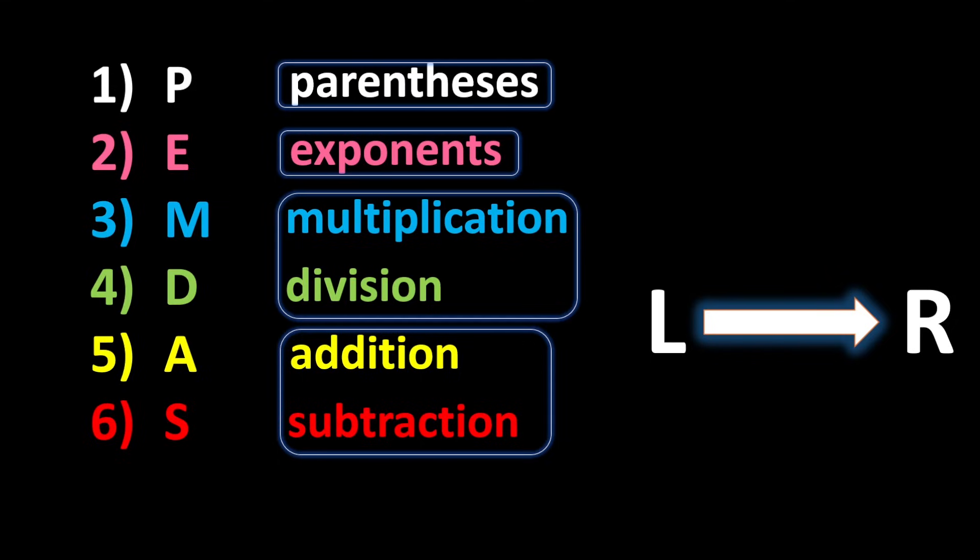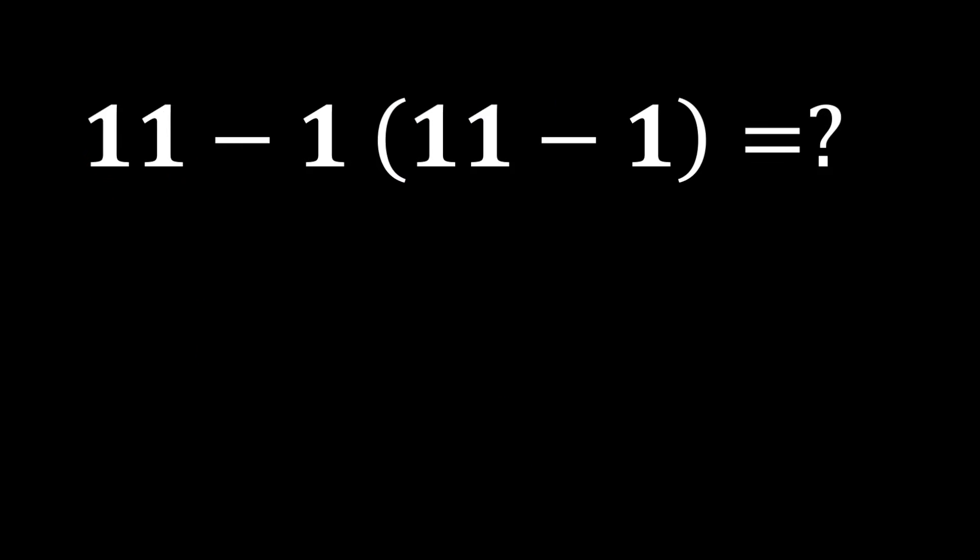With these explanations, let's solve the question at the beginning of the video according to the order of operations. According to PEMDAS, we must solve the parentheses first. So 11 minus 1 becomes 10.